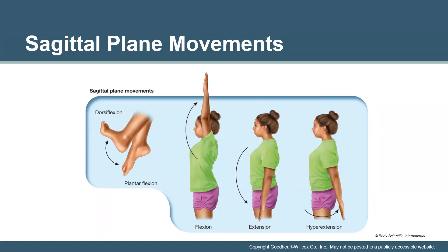When looking at the shoulder, from anatomical position, flexion of the shoulder brings the arm up near the ear. Extension comes out of flexion and back to neutral. A hyperextensive activity starts at neutral or anatomical position and extends the arm backwards behind the body.